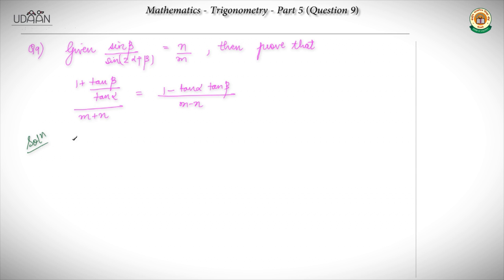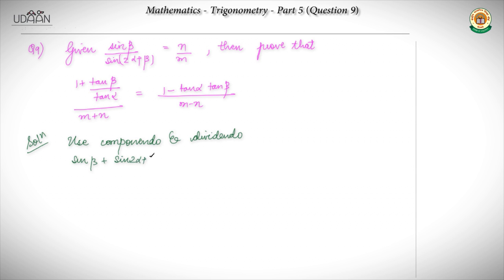One thing that I have in mind is to use componendo and dividendo. That is pretty obvious, because for me it becomes sin β plus sin(2α + β) upon sin β minus sin(2α + β), which will give us m plus n upon n minus m.